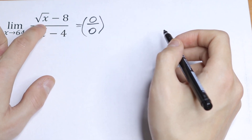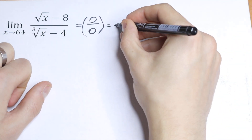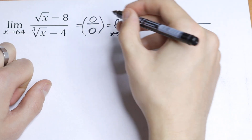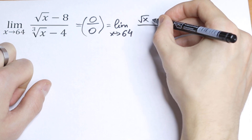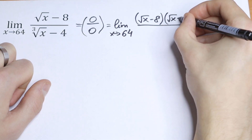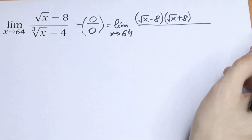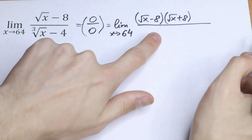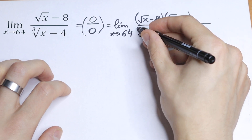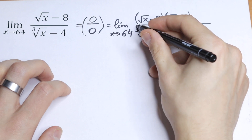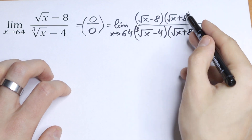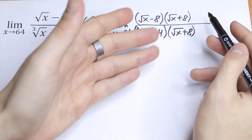Let's multiply by the conjugate of our denominator first. We have the limit as x approaches 64. In the numerator, we multiply square root of x minus 8 by its conjugate, square root of x plus 8. We also divide the denominator — cube root of x minus 4 — by square root of x plus 8. Nothing changes overall.